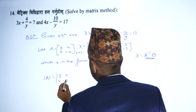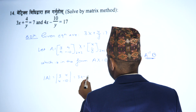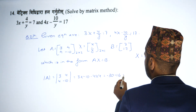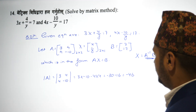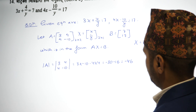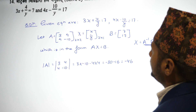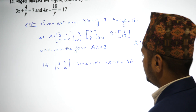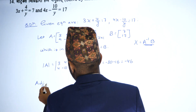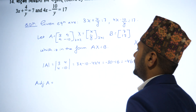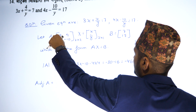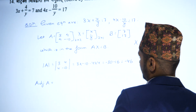X equals A inverse times B. The determinant of A is (-10)(3) minus (4)(4), which gives minus 30 minus 16, equals minus 46.